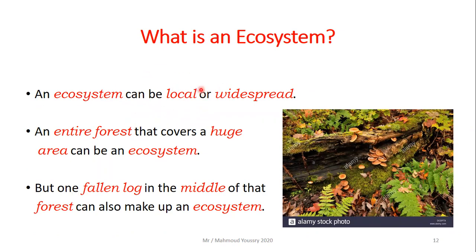The living community of most ecosystems might include thousands of populations. Ecosystems can be local or widespread — very small or covering a huge area. An entire forest can be an ecosystem, and also one fallen log in the middle of the forest can make up an ecosystem, with organisms like mushrooms and grasses growing on it.